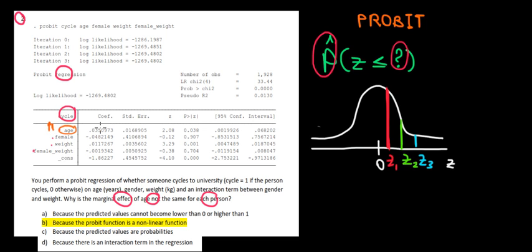...then we know that the Z value is going to increase by 0.035. But that's just the Z value. The probability of having such a result is going to increase differently because notice...